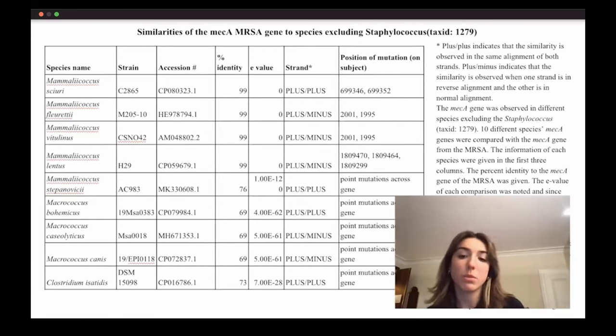M. sciuri and M. lentis produced PBP2A family beta-lactam-resistant peptidoglycan transpeptidase mecA. That's the name of the protein. And M. fleuretti and M. vitulinus encoded PBP2, which is also a derivation of the penicillin binding protein 2A. M. vitulinus had nine binding sites, which was able to bind to beta-lactam antibiotics. And a bunch of these species like M. caseolyticus had mecD, which encoded the alternative PBP2A mecD.